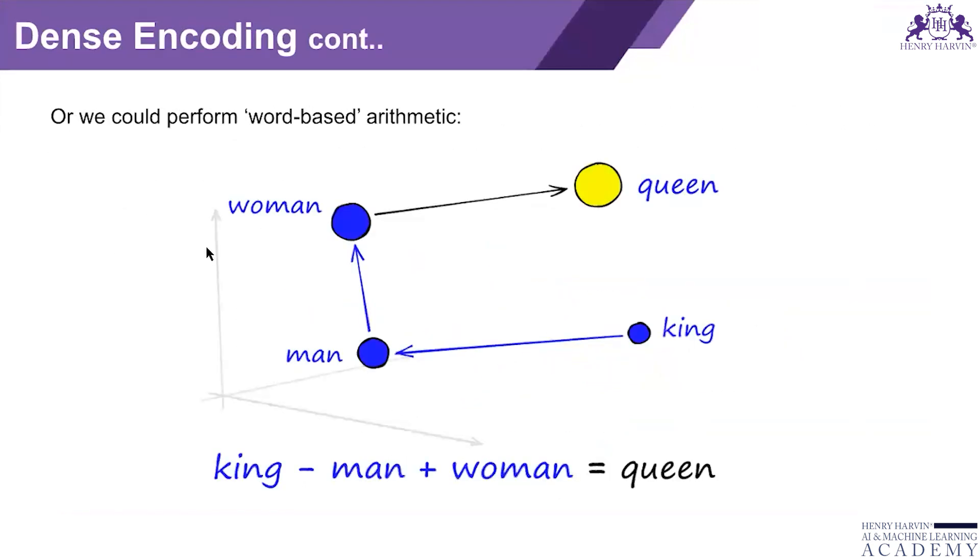Just like that: woman, queen, man, king. If king minus man plus woman equals queen. These are the techniques we can use to predict the output.